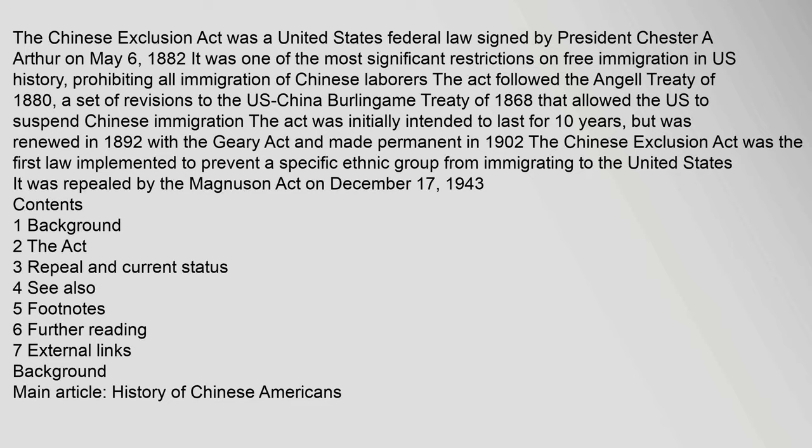The Chinese Exclusion Act was a United States federal law signed by President Chester A. Arthur on May 6, 1882. It was one of the most significant restrictions on free immigration in U.S. history, prohibiting all immigration of Chinese laborers. The act followed the Angel Treaty of 1880, a set of revisions to the U.S.-China Burlingame Treaty of 1868 that allowed the U.S. to suspend Chinese immigration. The act was initially intended to last for 10 years, but was renewed in 1892 with the Geary Act and made permanent in 1902. It was the first law implemented to prevent a specific ethnic group from immigrating to the United States, and was repealed by the Magnusson Act on December 17, 1943.